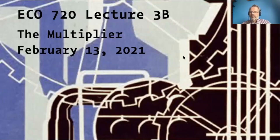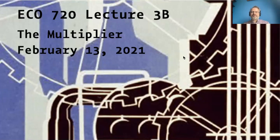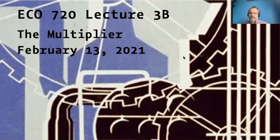In this second video on the multiplier, I want to talk about what we know, or think we know, about the multiplier in real economies. The multiplier is essentially a ratio between an autonomous change in spending — usually a change in government spending or taxes — and the final change in GDP.